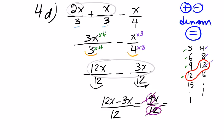3 goes into 9, 3 times. 3 goes into 12, 4 times. So 3x over 4 or three-quarters x.